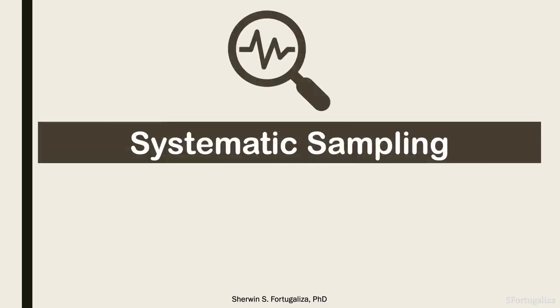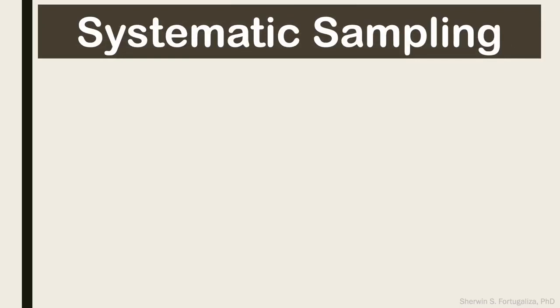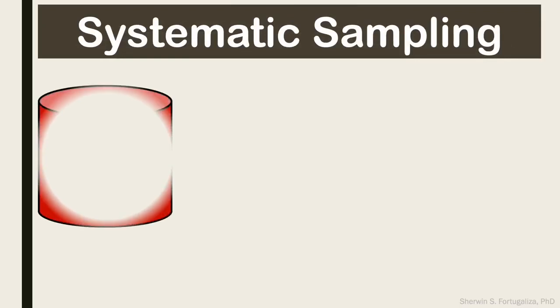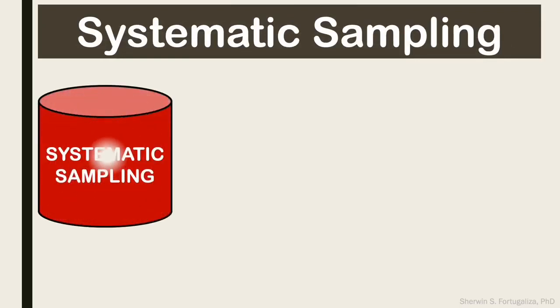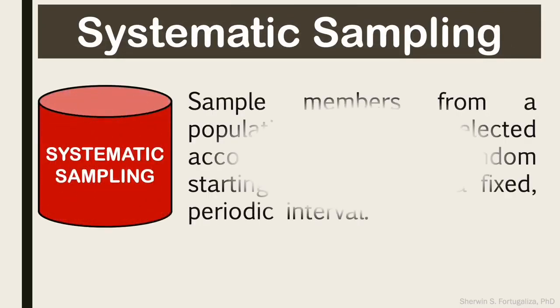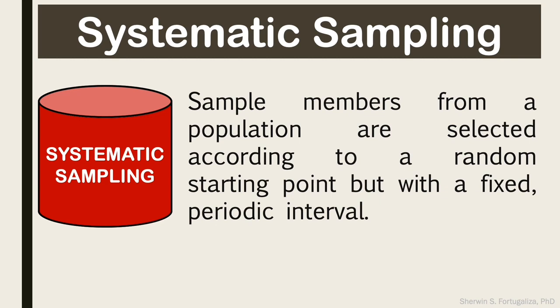Hello everyone. In this short video we are going to learn systematic sampling. In systematic sampling, sample members from a population are selected according to a random starting point but with a fixed periodic interval.